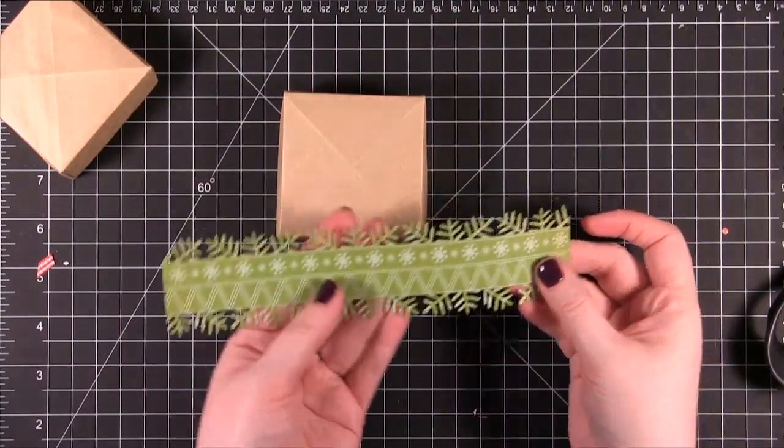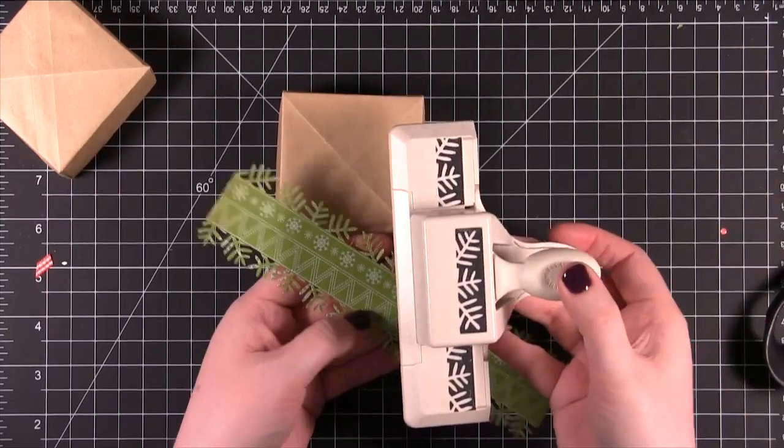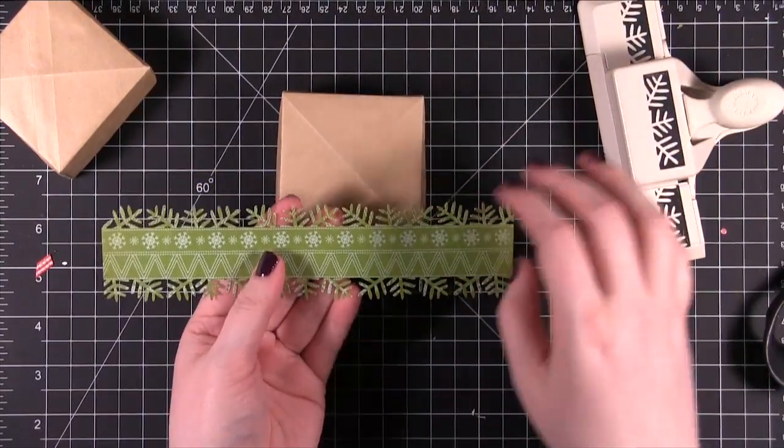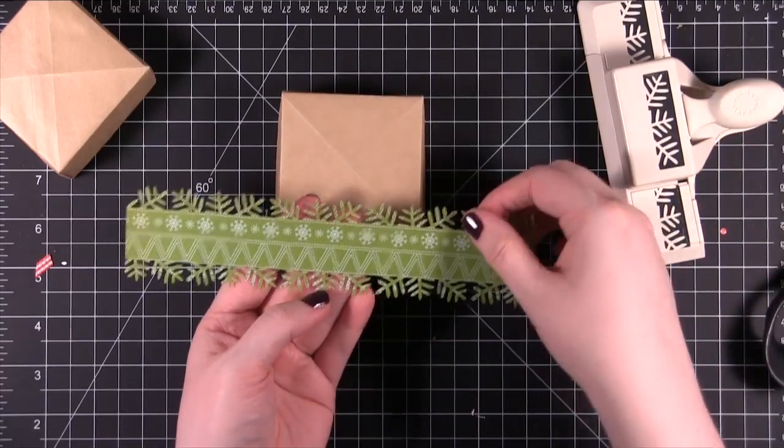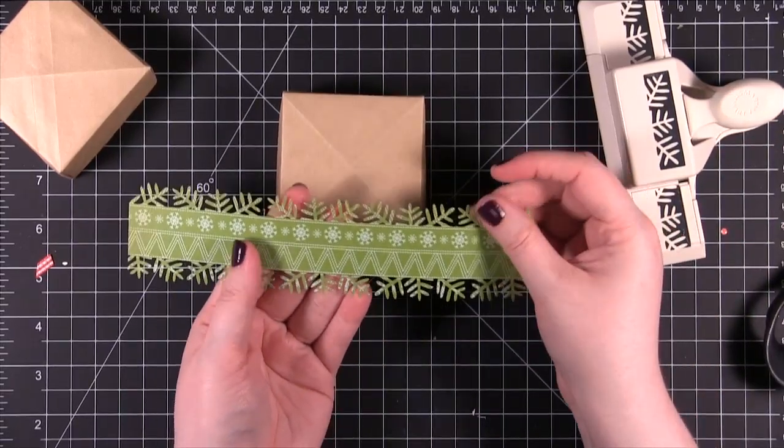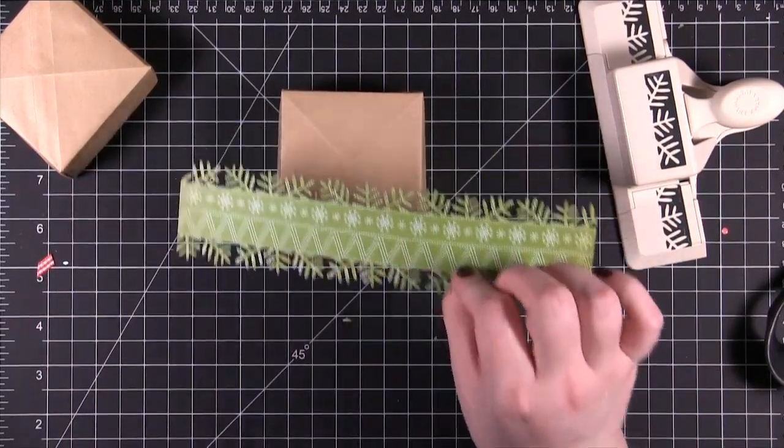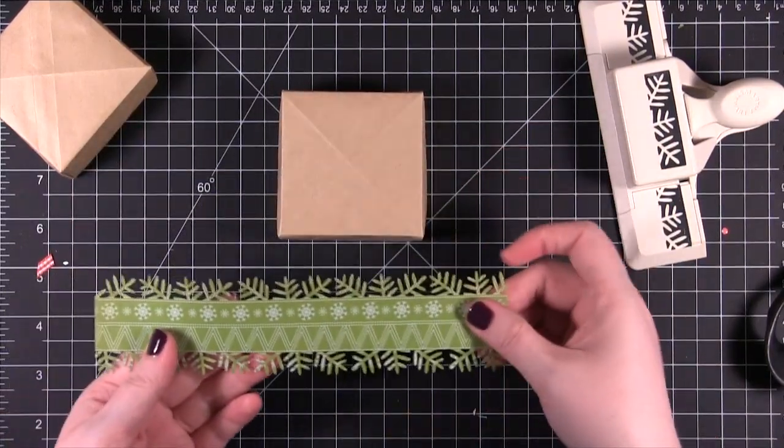I've done the same with this pattern paper except I used this punch from Martha Stewart Crafts. It does kind of a little sprig of pine tree or something like that. It's a little bit of Christmas tree. So I'm going to score this and then I'll put it straight onto the box.